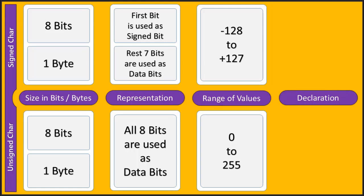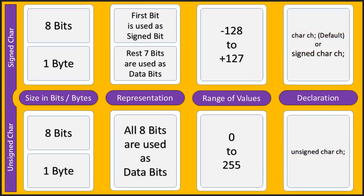The final parameter is declaration. To declare a signed character you use the keyword 'signed', whereas to declare an unsigned character you use the keyword 'unsigned'. In most reference books the default declaration is given as unsigned, but when I tried it in programming I found it to be signed. I think it depends on the compiler and the platform being used.